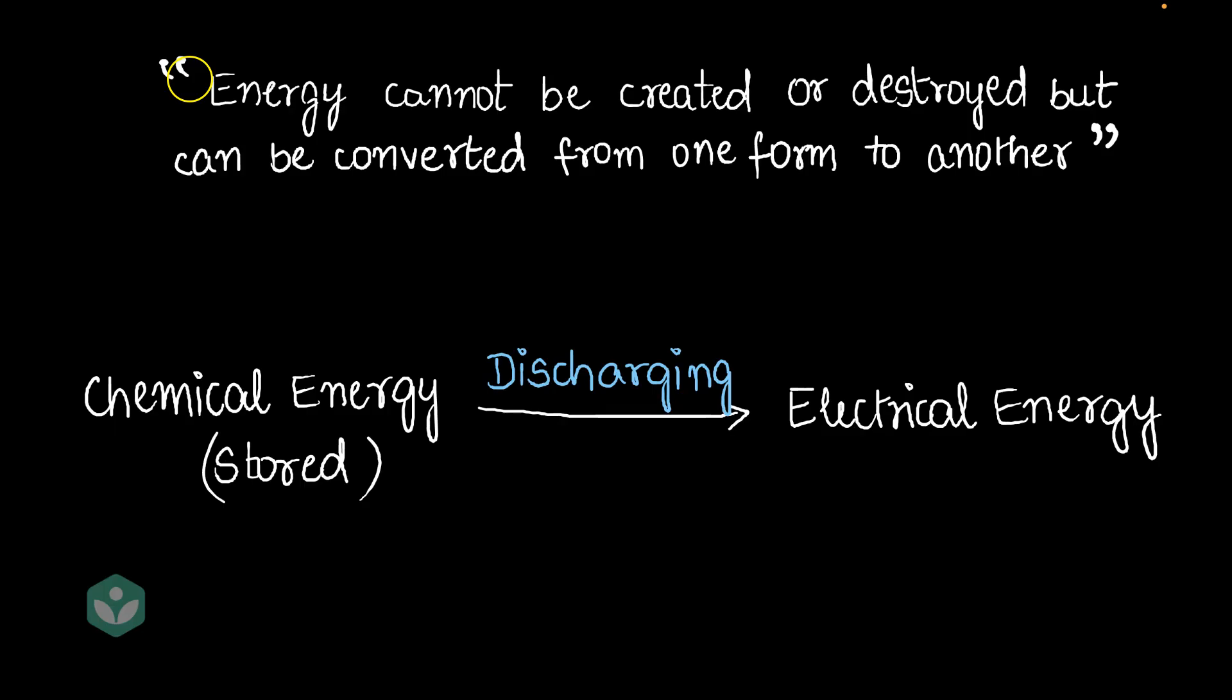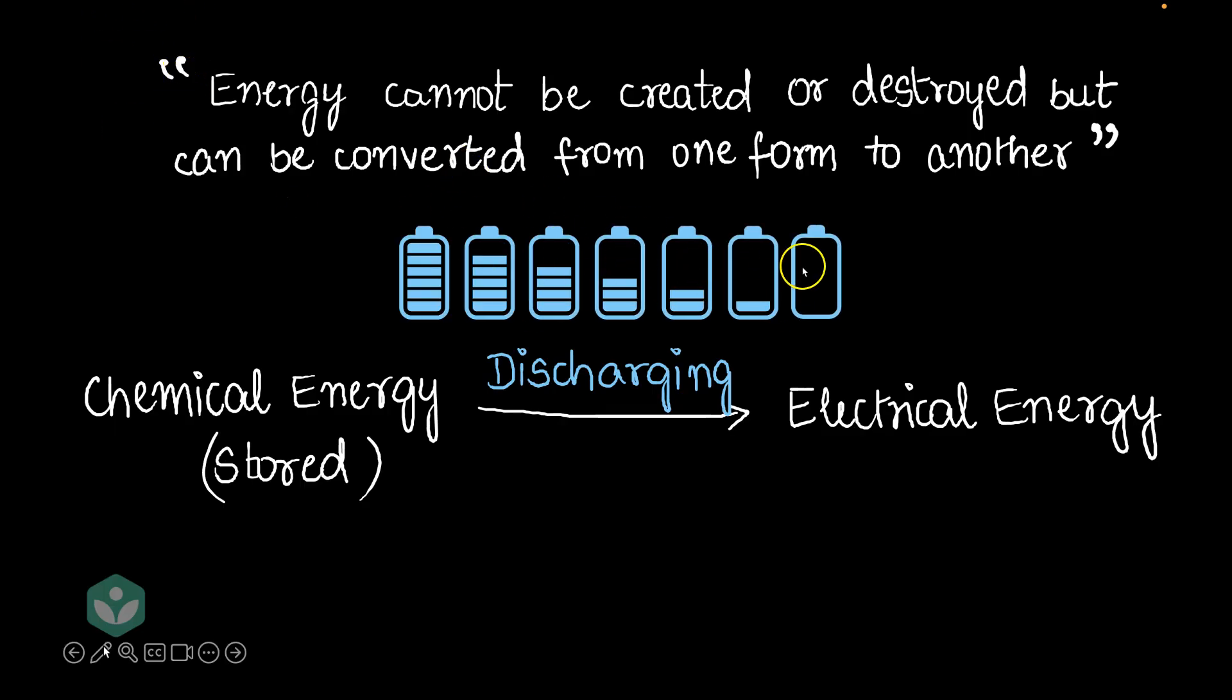And this is what it looks like. You start off with a battery full of chemical energy and you slowly use up that chemical energy and are left with an empty battery. No chemical energy here. And some batteries allow us to do the reverse as well. They allow us to convert electrical energy into chemical energy. These are called rechargeable batteries. And this process is called charging.